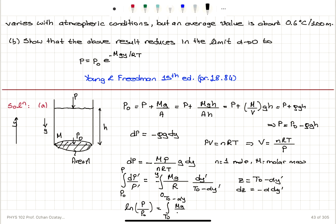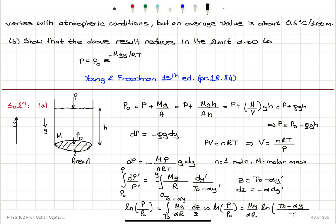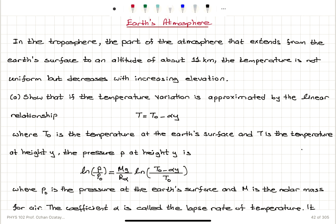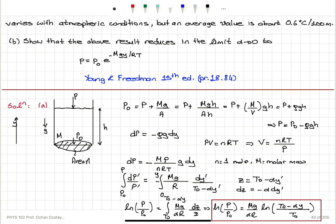For dy′ I substitute −dz/α, so the minus signs combine to give a plus, yielding Mg/(αR) · ∫ dz/z. This integral gives: ln(P/P₀) = (Mg)/(αR) · ln((T₀ − αy)/T₀). This is exactly the equation between pressure and distance on the y-axis that I wanted to show.